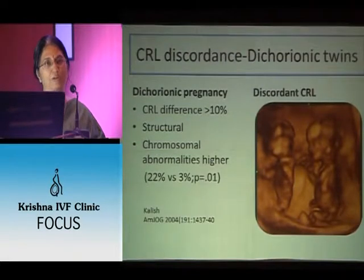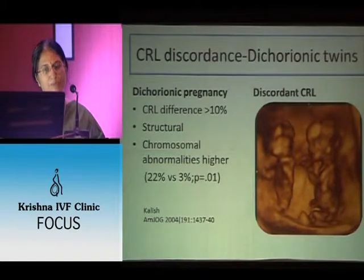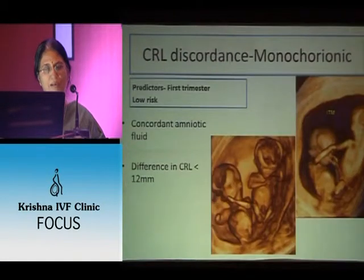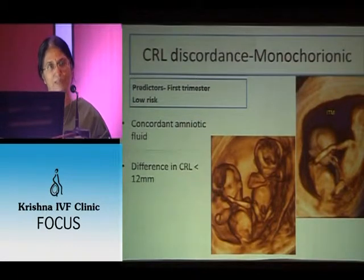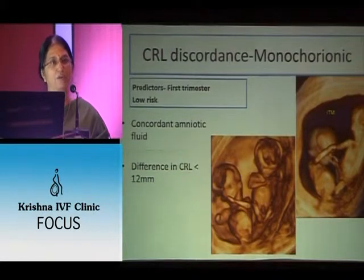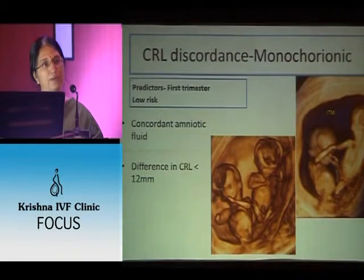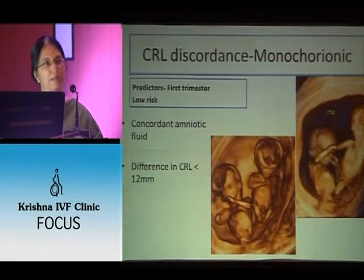This is an example of dichorionic twins with discordant CRL. We call them discordant if the CRL difference is more than 10%, and these fetuses may subsequently show structural or chromosomal abnormality. But if it is monochorionic, you must know the chorionicity. If you find discordance in a monochorionic pregnancy, watch out for twin-to-twin transfusion, especially if the CRL difference is more than 10 to 12 millimeters.